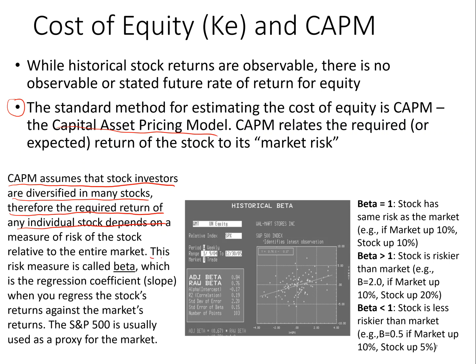This measure of how risky a stock is relative to the entire market is called beta. You calculate beta using a regression coefficient, or slope, when you regress the stock's returns against the market's returns. When we talk about the stock market, we'll use the S&P 500, which covers about 80% of the market value of equities — so it's a pretty good market proxy.